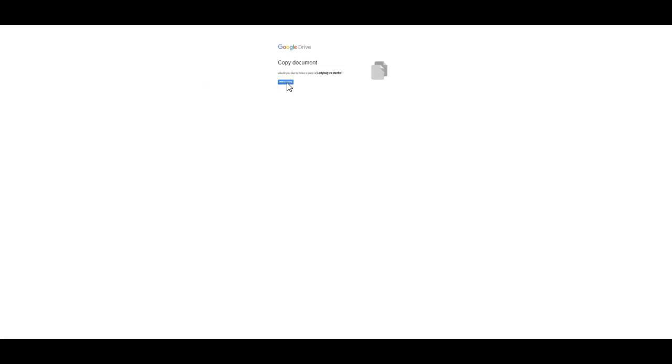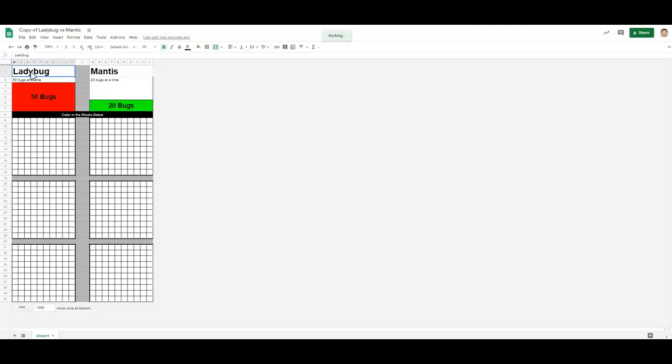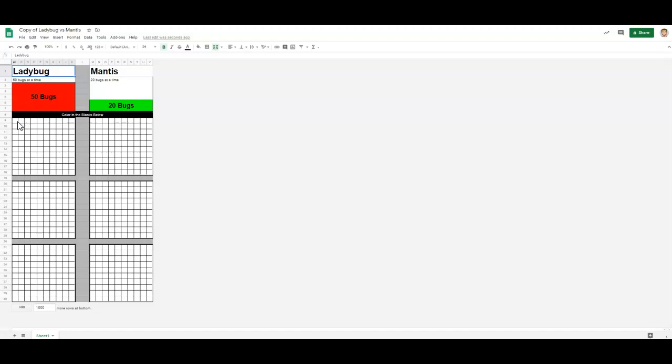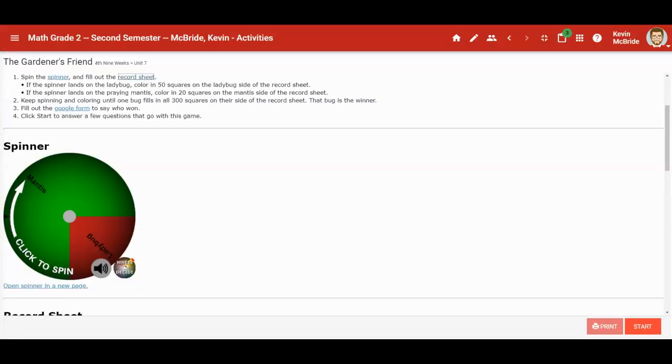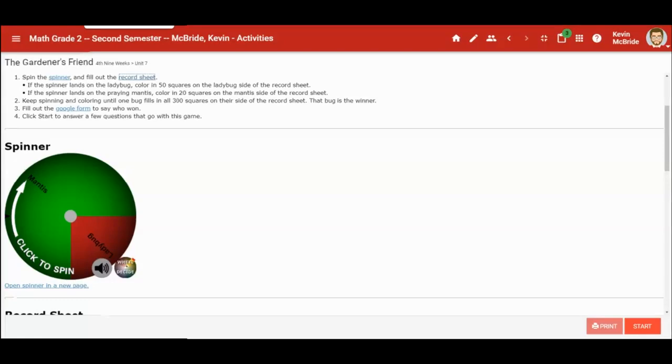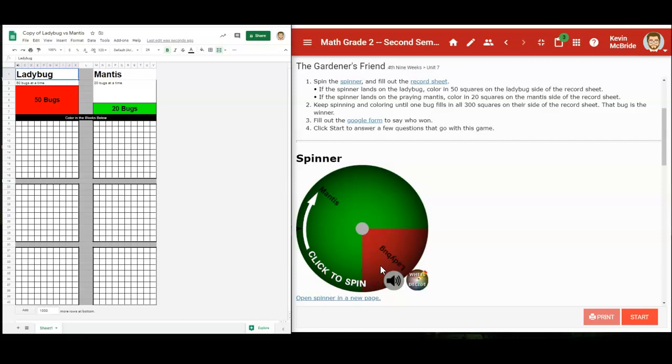When you play this game, you're going to want to open up the record sheet, make a copy of it, and I like to arrange it so that I can have the spinner on one side of my screen and the record sheet on the other side of my screen. You can also just switch back and forth between tabs every time and that's okay too.